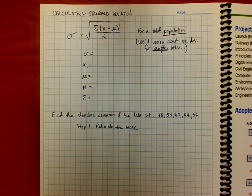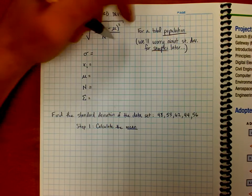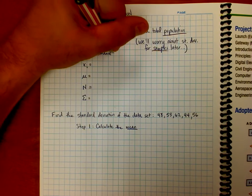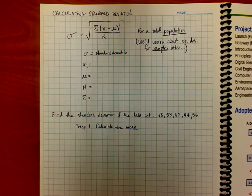So a few things to understand first. This symbol here stands for the standard deviation in what we're doing here. And this is the standard deviation of a total population according to our formula sheet. But again, don't worry about it. That's what we're trying to solve for.